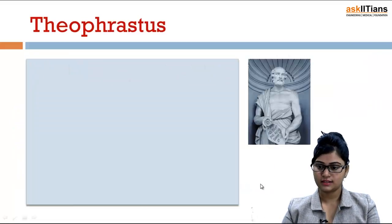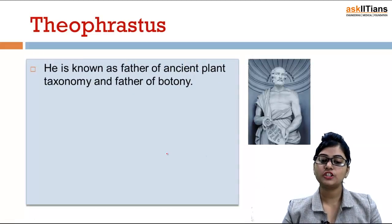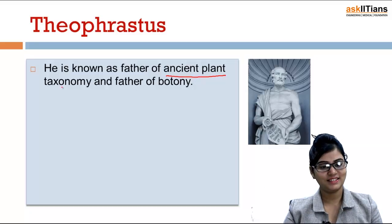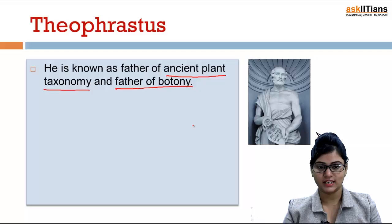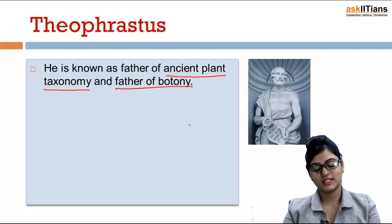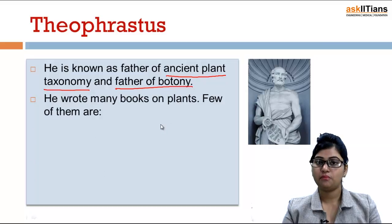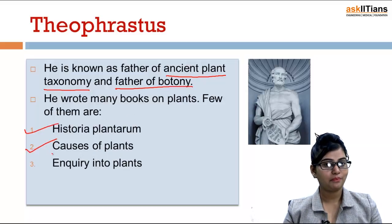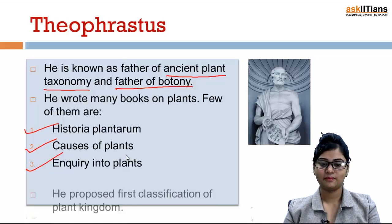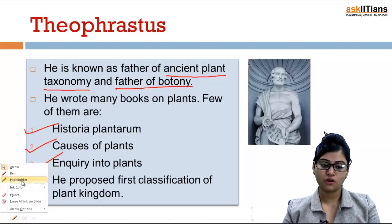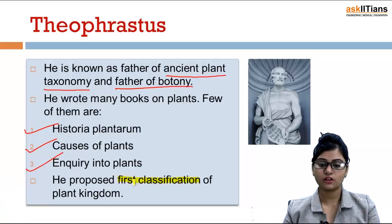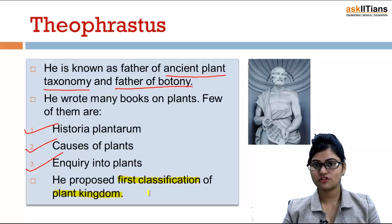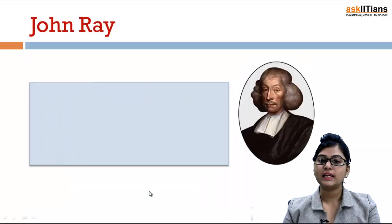Then came the scientist Theophrastus. He is known as the father of ancient plant taxonomy as well as the father of botany. Aristotle is the father of biology and zoology, and Theophrastus is the father of botany. He wrote many books on plants, and a few of them are Historia Planetarium, Causes of Plants, and Inquiry into Plants. He proposed the first classification of the plant kingdom.